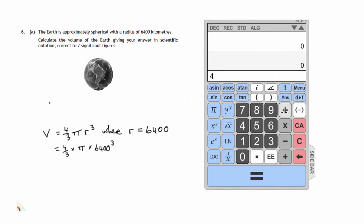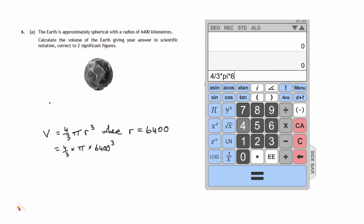4 thirds, 4 divided by 3, times pi button, times 6400 raised to the power, and this is y to the power x raised to the power 3. The answer is so large that it automatically goes into standard form mode in this calculator.